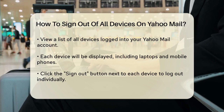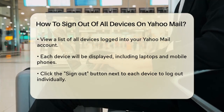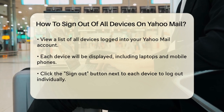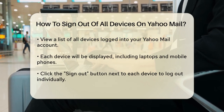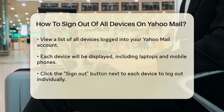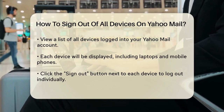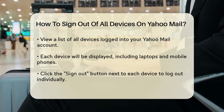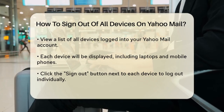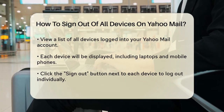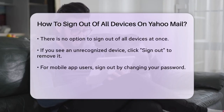Here you'll find an option that says Recent Activity on the left-hand side of the screen. Click on this to see a list of all the devices that have your Yahoo Mail account logged in. This list will show you each device, including laptops, mobile phones, and any other devices where your account is active. To sign out of any of these devices, simply click on the Sign Out button next to each device. You'll need to do this one by one, as there isn't a single button to sign out of all devices at once.